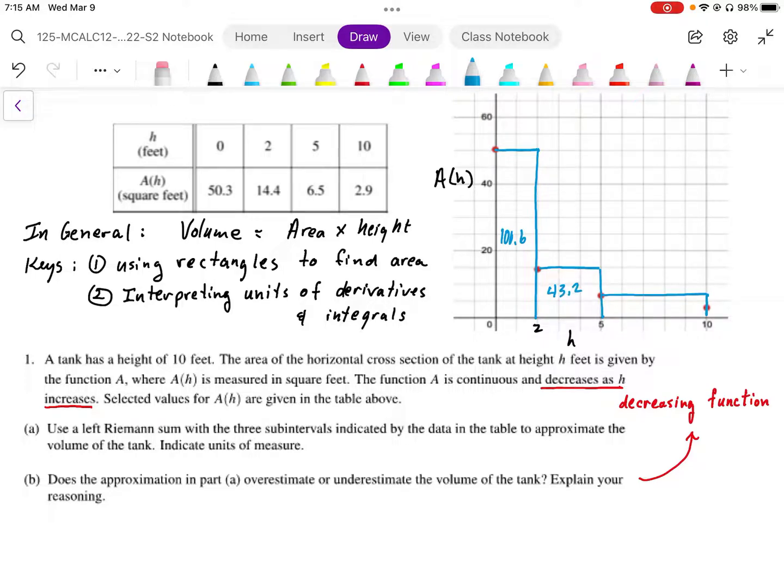And the last one gives us a width of 5 and a height of 2.9, so it gives us an area of 32.5.